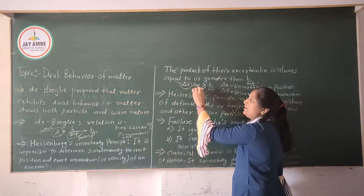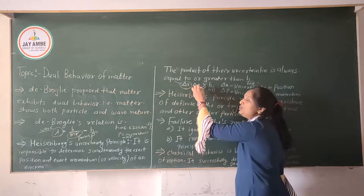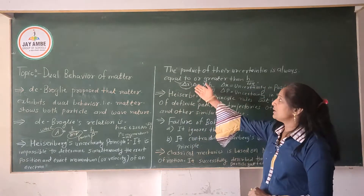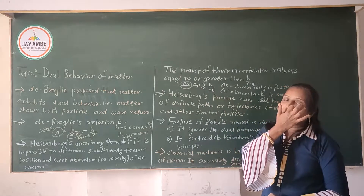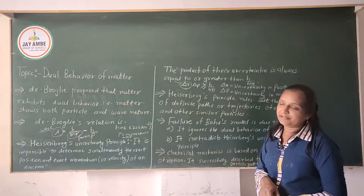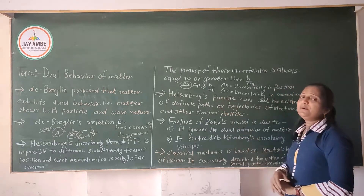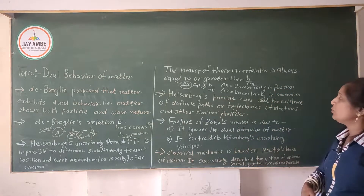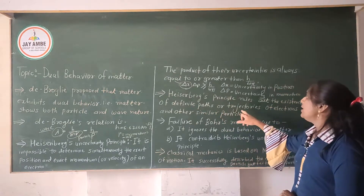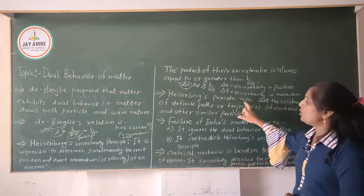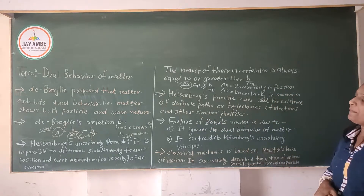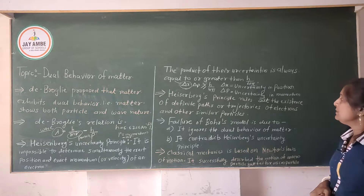The position and momentum cannot be determined simultaneously by yourself. Heisenberg's uncertainty principle rules out the existence of definite paths or trajectories of electrons and other subatomic particles.